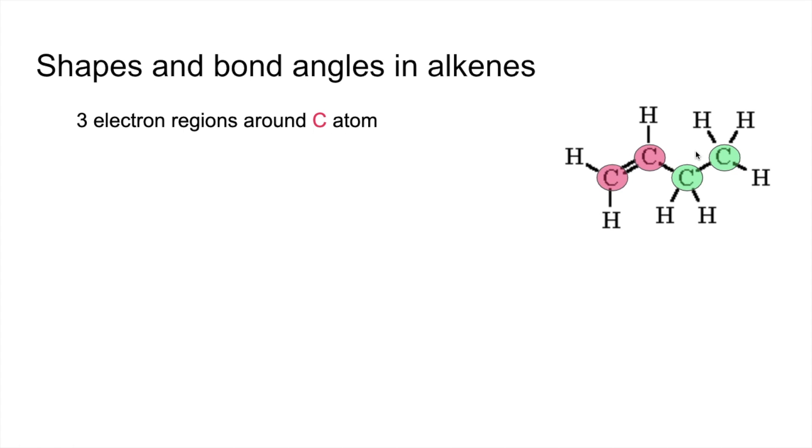To explain the shape and angle around those carbons, we need to look at the amount of electron regions around the carbon. Around either of these pink carbons, there are three electron regions—if we look at this one here, one, two, three. Remember, double bonds count as one electron region.